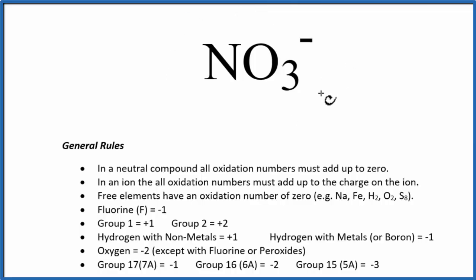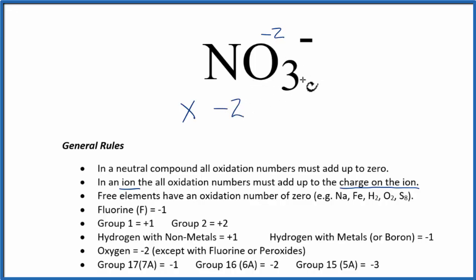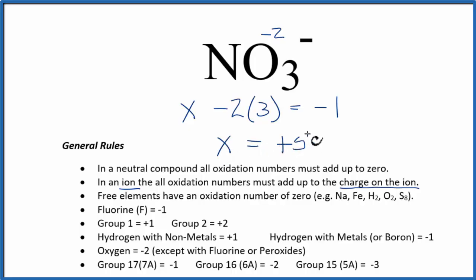For NO3⁻, the nitrate ion, we have a minus one charge. This is an ion, so the oxidation numbers for all the elements add up to the charge on the ion, which is minus one. Going down the list, oxygen is minus two. We set up an equation: x for nitrogen minus two times three oxygens equals minus one. Solving for x gives x equals positive five, so the oxidation number on the nitrogen is plus five. The strategy: find the element we know, and because it's an ion, all oxidation numbers add up to the charge on the ion.